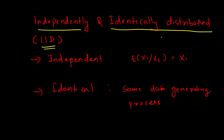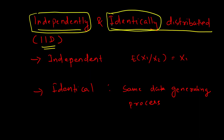So what is IID? IID stands for independently and identically distributed. The first I comes from independently and the second I is from identically. What that means is that each and every observation in your dataset is independent of each other. Mathematically, the expectation of observation one given observation two and other observations is just observation one — there is no change because of the presence of other observations.